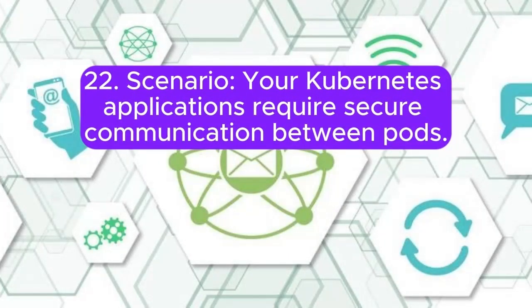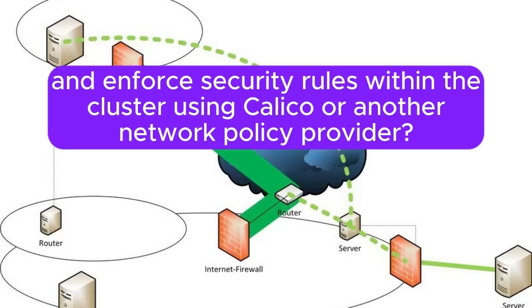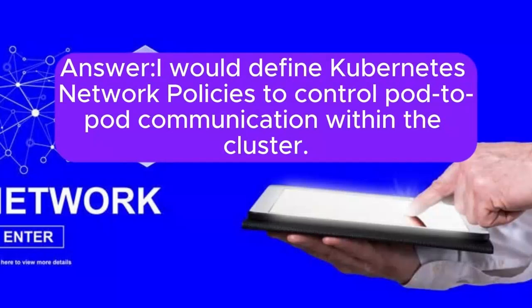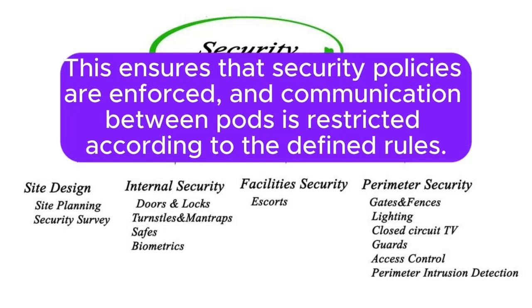Scenario 22: Your Kubernetes applications require secure communication between pods. How would you implement network policies to control pod-to-pod communication and enforce security rules within the cluster using Calico or another network policy provider? Answer: I will define Kubernetes network policies to control pod-to-pod communication within the cluster. Rules would be specified to allow or deny traffic based on labels, namespaces, and specific ports. This ensures that security policies are enforced and communication between pods is restricted according to the defined rules.